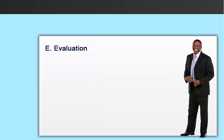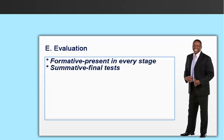The evaluation phase consists of two parts: formative and summative. Formative evaluation is present in each stage of the ADDIE process. Summative evaluation consists of tasks designed for domain-specific criteria, related referenced items, and providing opportunities for feedback from the users.